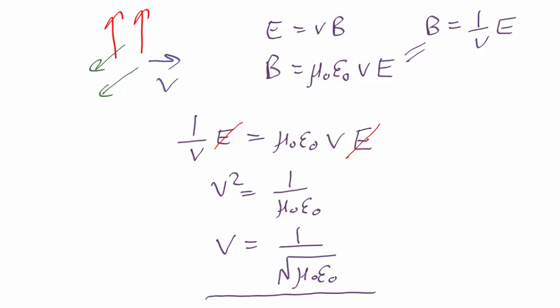So yes, the equations are telling us that it is possible to meet both these requirements simultaneously, and thus have a self-propagating combination of electric and magnetic fields that could travel through space all by themselves with no need for wires or charges, as long as it goes at this speed.